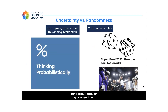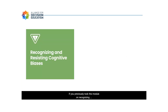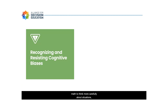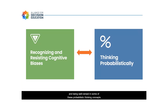Thinking probabilistically can help us navigate those uncertain events with more precision and confidence. If you previously took the module on recognizing and resisting cognitive biases, you are familiar with the many ways that heuristics and cognitive biases impact our decision making. There is empirical evidence from research studies that shows that being numerate — including having a positive disposition toward using basic math to think more carefully about situations — and being well-versed in probabilistic thinking concepts actually reduces our susceptibility to some of those biases.